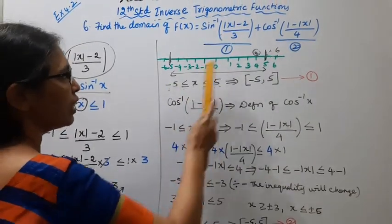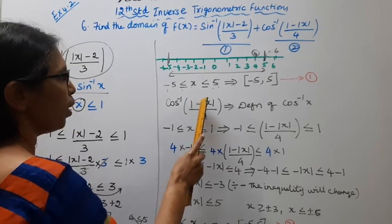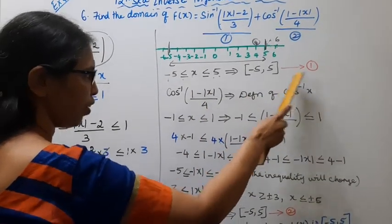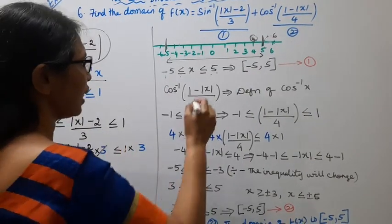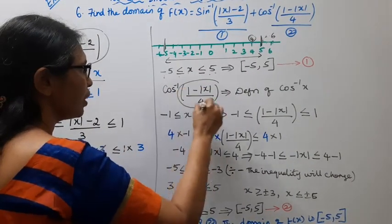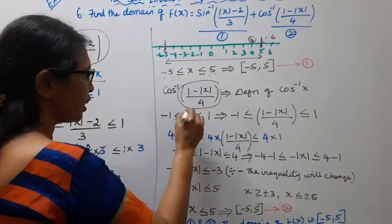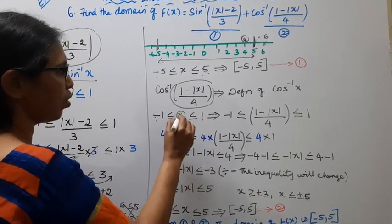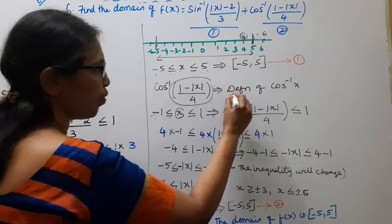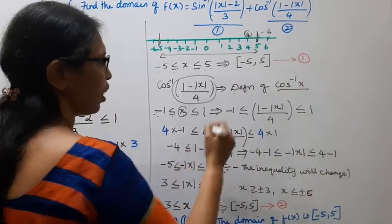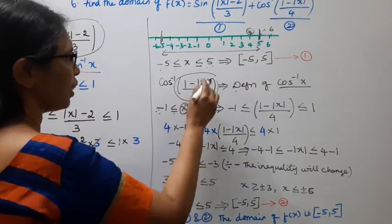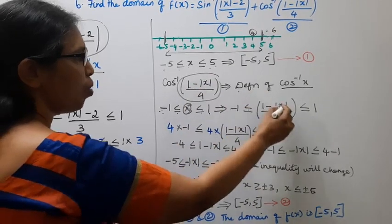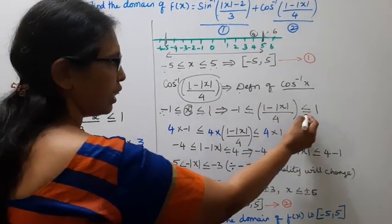Now for part 2, cos inverse of 1 minus mod x by 4. Using the definition of cos inverse of x: minus 1 less than or equal to x less than or equal to 1. Applying this to 1 minus mod x divided by 4: minus 1 less than or equal to 1 minus mod x divided by 4, less than or equal to 1.